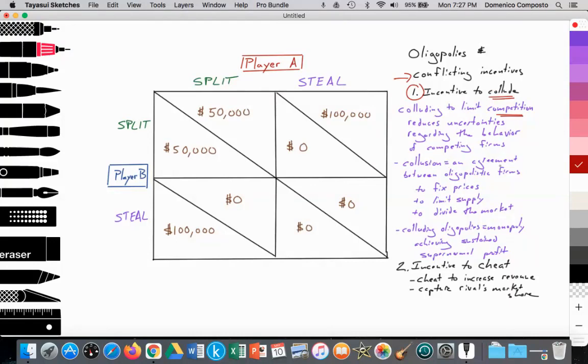Collusion, being in an agreement between oligopolistic firms, can be these firms designed to fix prices. That all the oligopolistic firms set prices high, instead of setting off price wars between each other. So they all agree to set price high. And as a result, they can all perhaps achieve supernormal profit and sustain that supernormal profit.